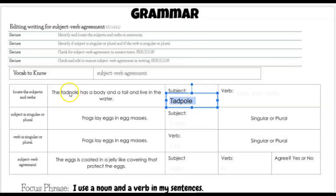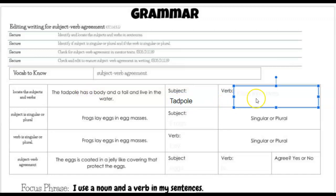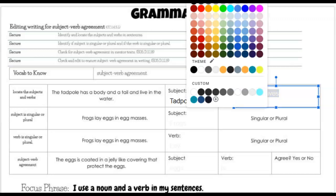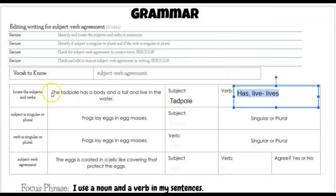The verb that matches the tadpole — the verb is right here — has. So the first verb is has, but there's another verb in this sentence. The tadpole has — they match — a body and tail and live. So here's the problem: that 'live' should be 'lives.' In your notes, you should have 'has,' and that 'live' should be changed to 'lives.'